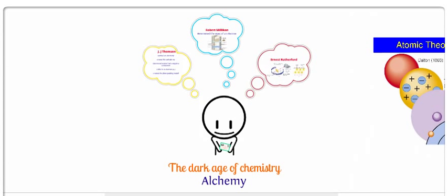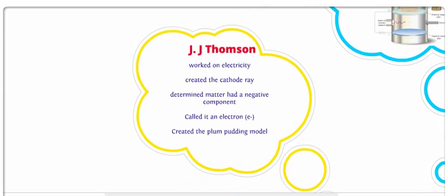Some good things came out of alchemy, but not a lot. There was a little bit of scientific discovery, but not much. In fact, it wasn't until almost the 1900s when we actually started to see real work done in the field of chemistry.